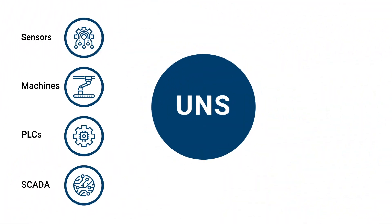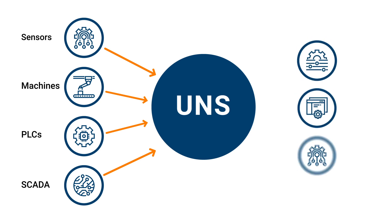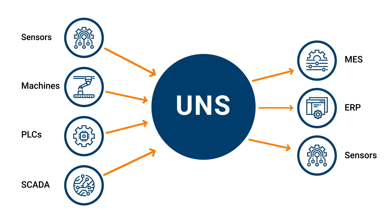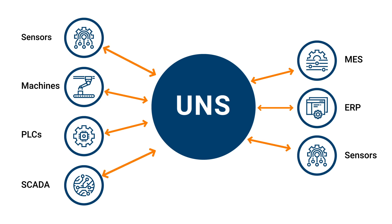For example, in manufacturing, all shop floor components — sensors, machines, PLCs, SCADA, and robots — would publish data to the unified namespace. Enterprise applications such as MES and cloud analytics then subscribe to the UNS to receive data as events. They use that information to execute tasks and, in some circumstances, publish relevant data back into the UNS for other nodes to consume.